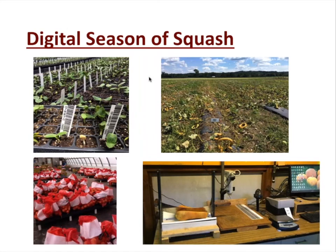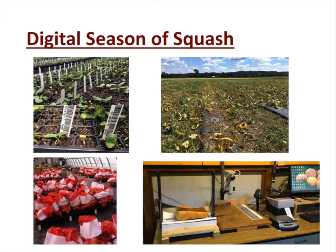The motivation to move away from handwritten systems came as the program started to really scale up — with genomic selection, larger plots, more plants, and more analysis. They found themselves with many transplants in the greenhouse, many stakes to write and prepare, writers cramped from labeling, and hundreds to thousands of plots for the butternut breeding program with many routine observations being made repeatedly.